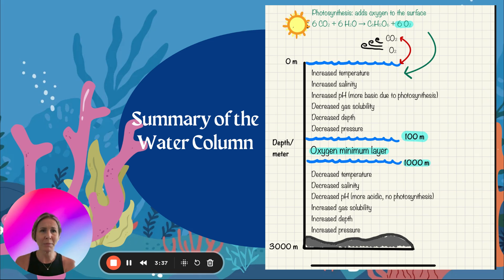Then at 100 to 1,000 meters, we're going to reach the oxygen minimum layer. This is where the most amount of cellular respiration and decomposition is occurring. That's why it's called oxygen minimum layer. So put it all together. What do you think is happening with oxygen? It's probably pretty low.